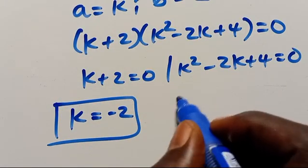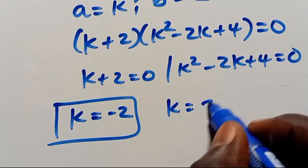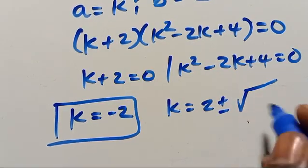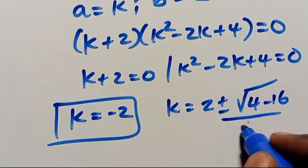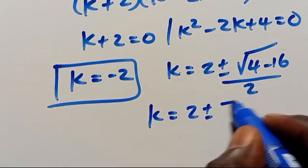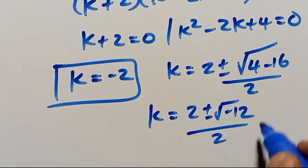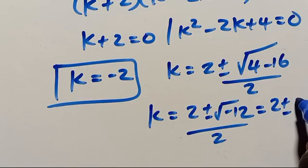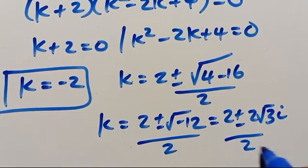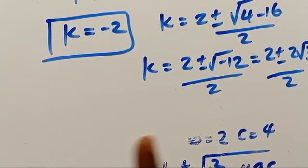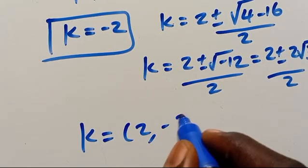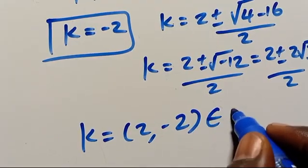Applying the quadratic formula to k squared minus 2k plus 4 equals zero gives k equals 2 plus or minus the square root of 4 minus 16, over 2, which equals 1 plus or minus root 3 times i. This is a complex solution so we discard it. Finally, considering real solutions, we have k equals 2 and k equals minus 2 as members of the ring of real numbers.